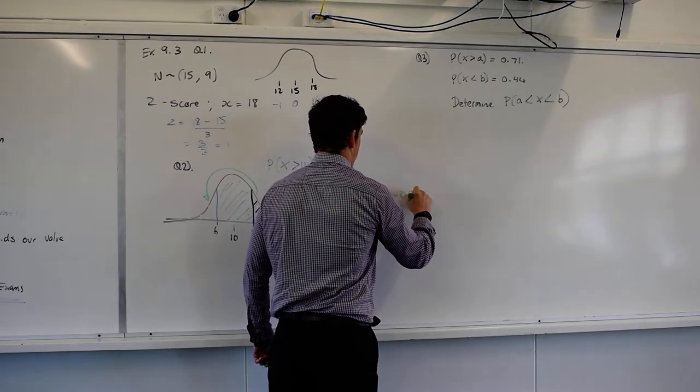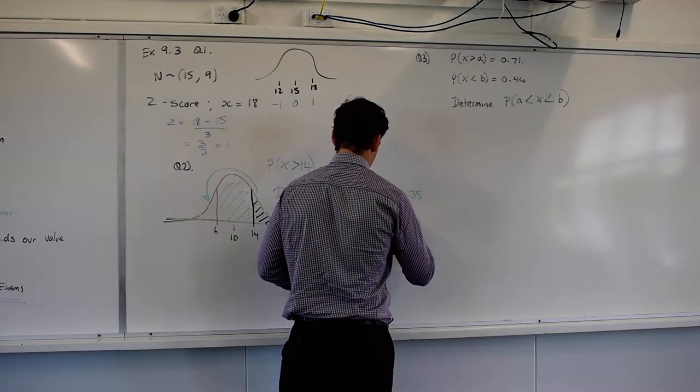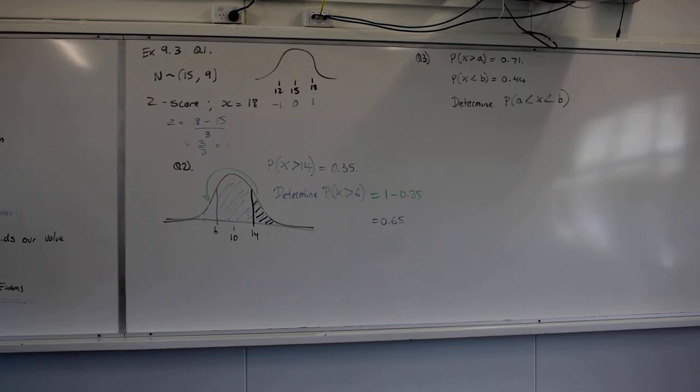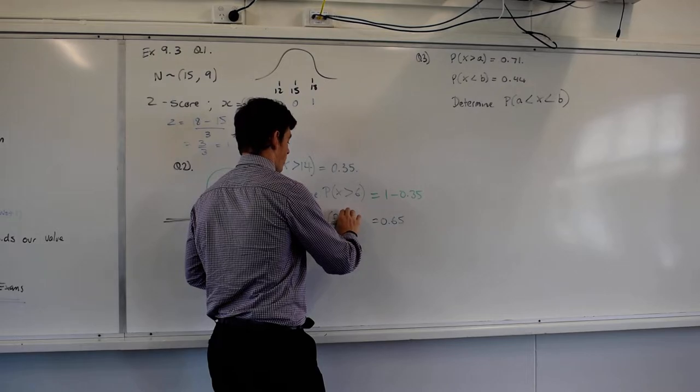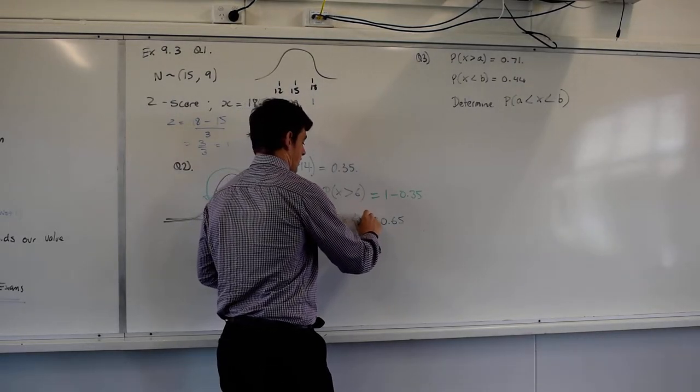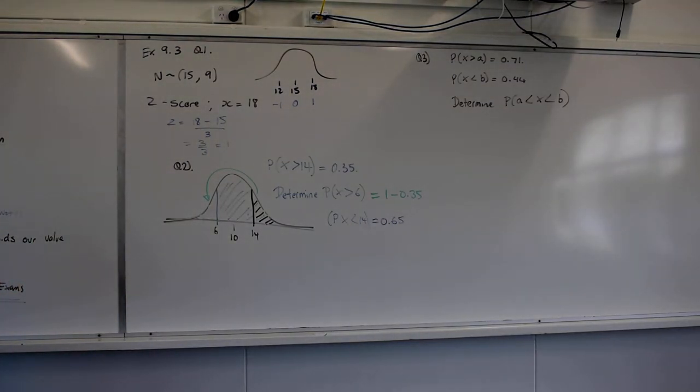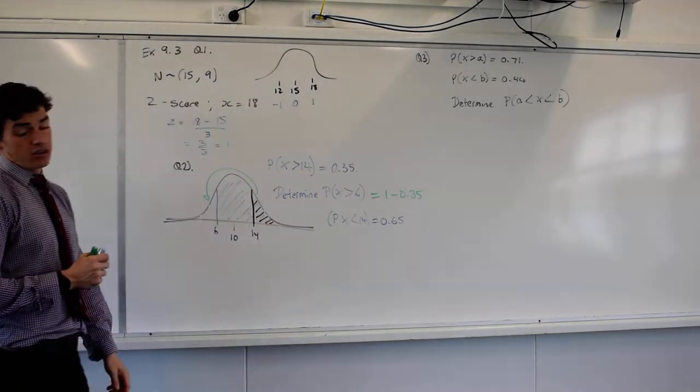1 minus 0.35, which equals 0.65. This is exactly the same as saying what's the probability that x is less than 14. When we take the probability of less than 6 and the probability that p is less than 6 is equal to the probability that p is greater than 14. What you're saying is exactly right.